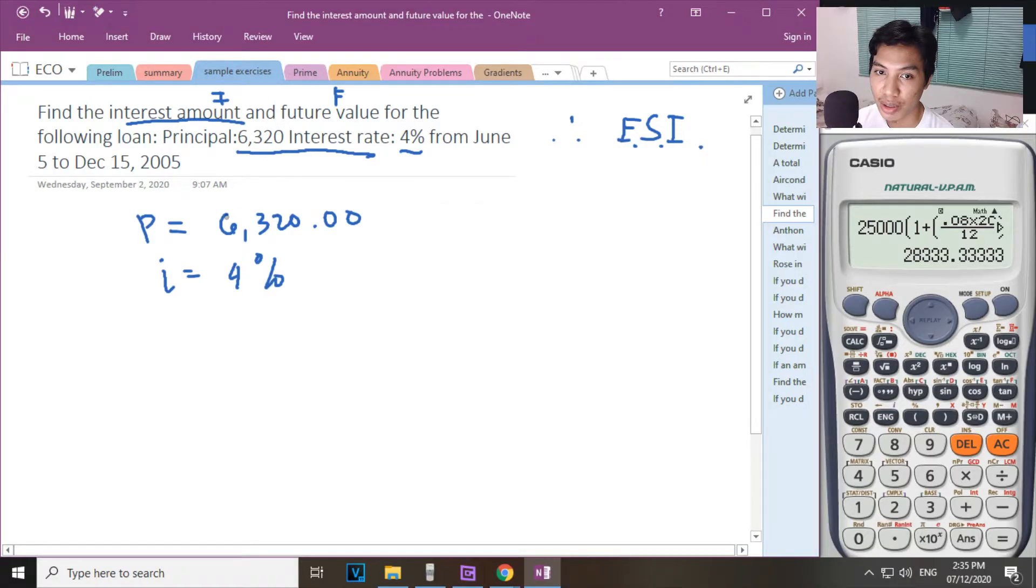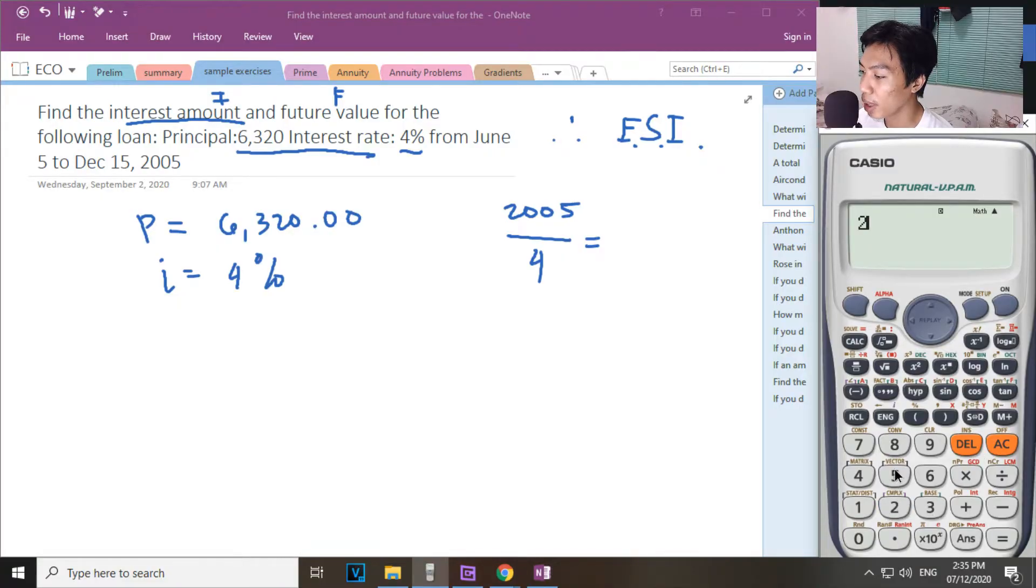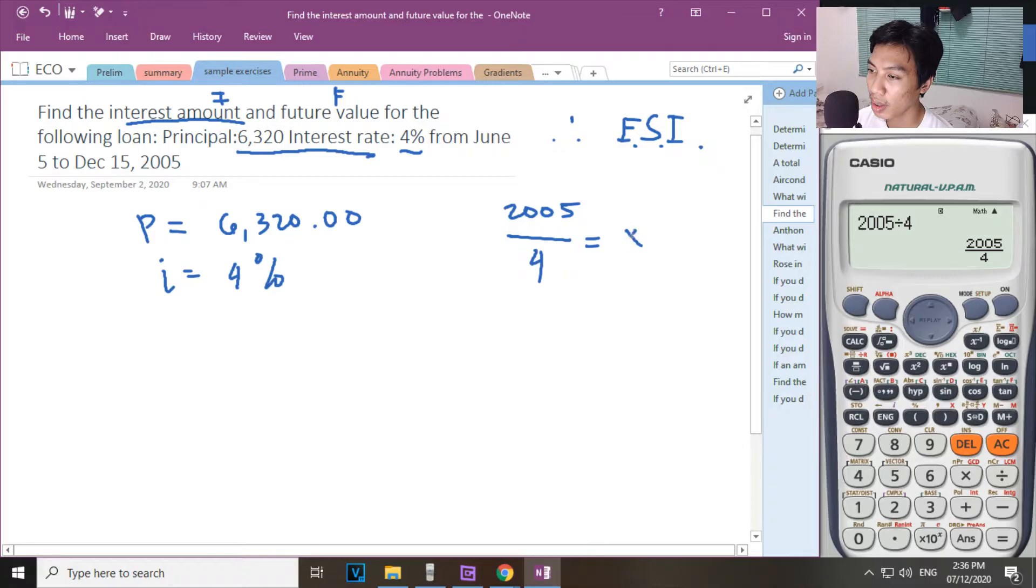From June 5 to December 15, 2005. So binigay yun date. Therefore, this is exact simple interest. Meron kang dates na June. So divide natin ang 4 in order for us to know if this is leap year. 2005 divide by 4. Hindi to leap year. Not leap year.